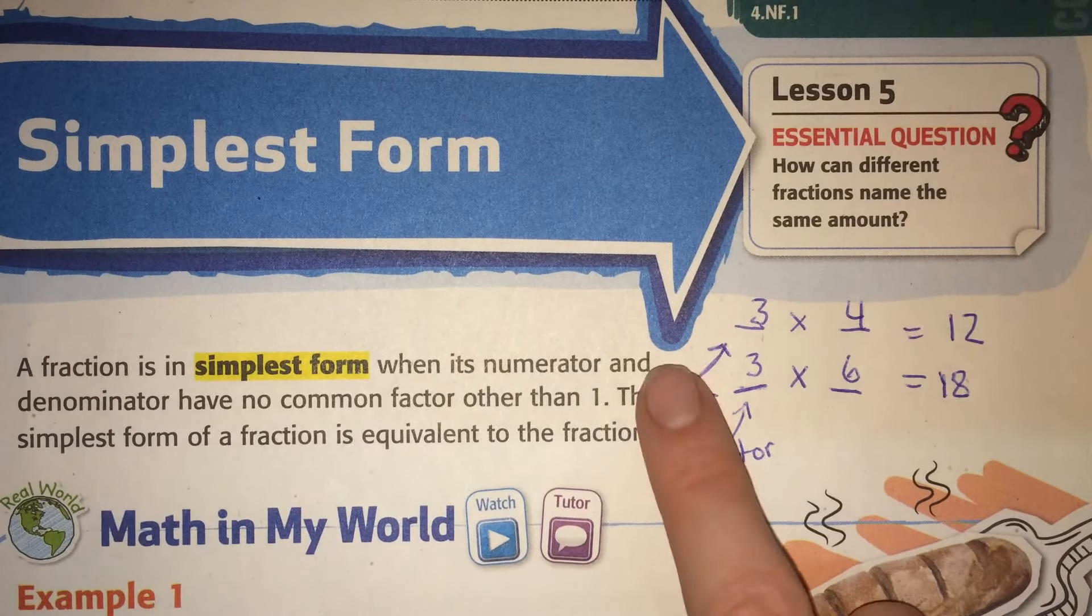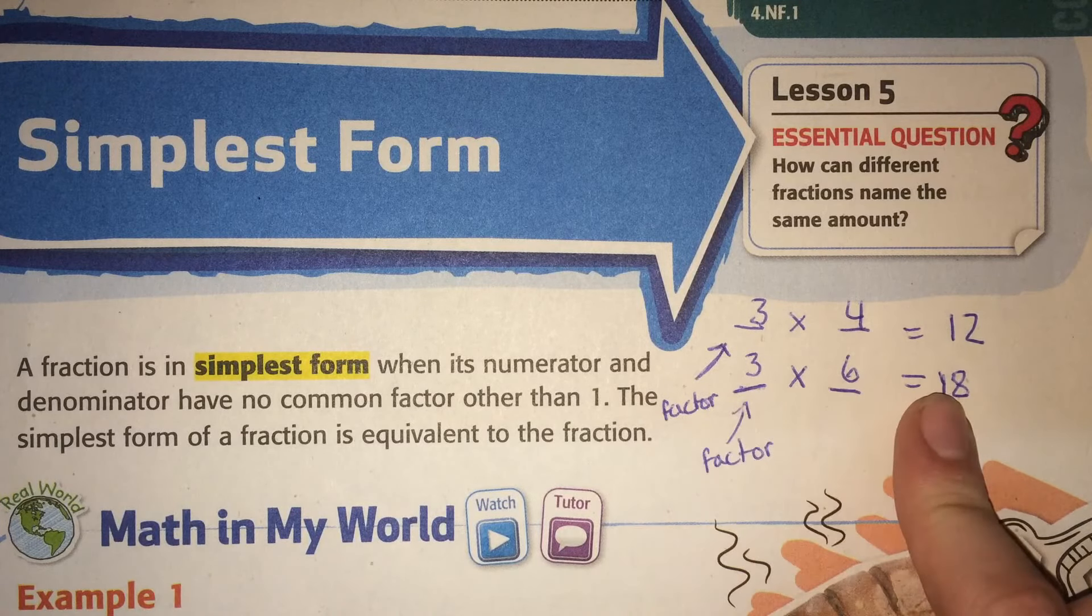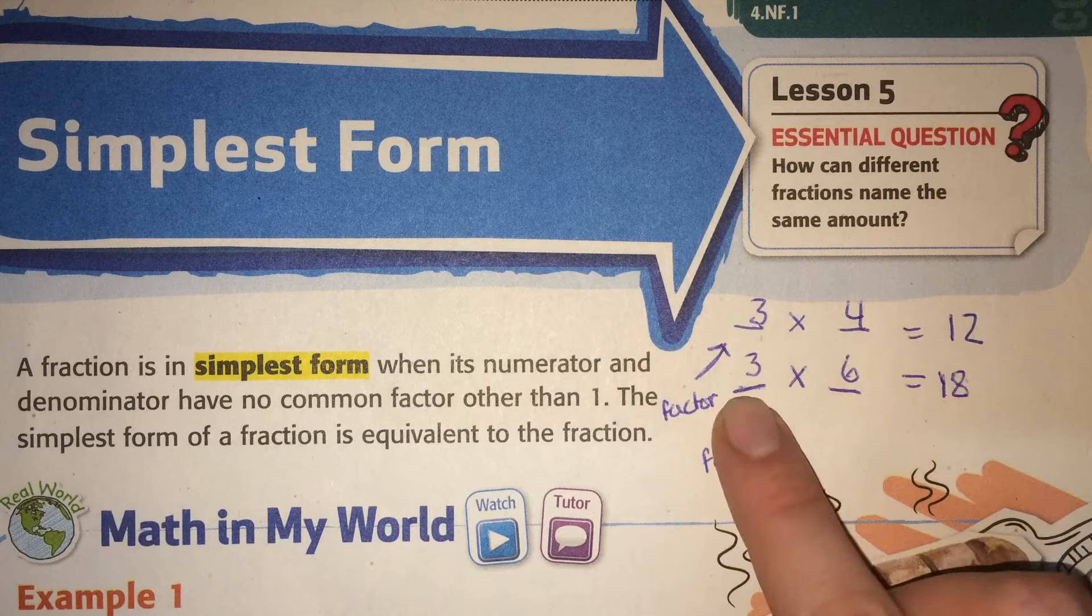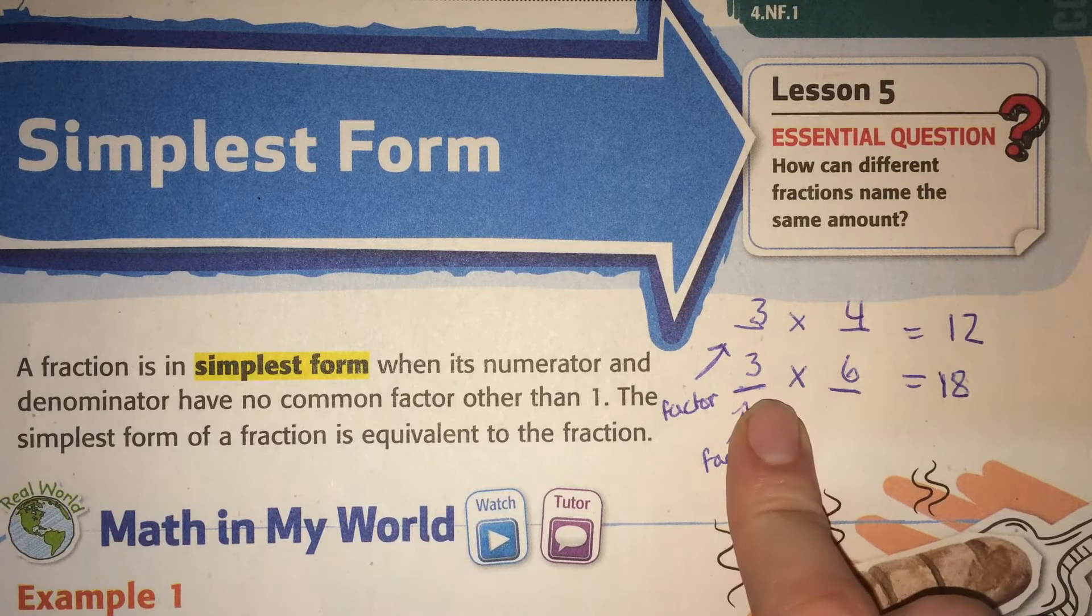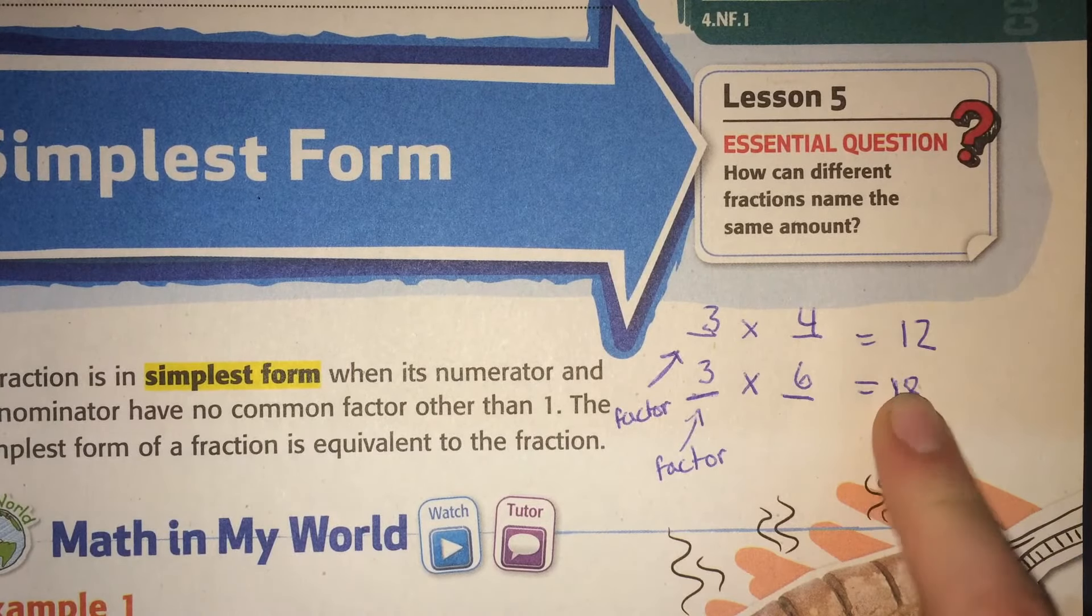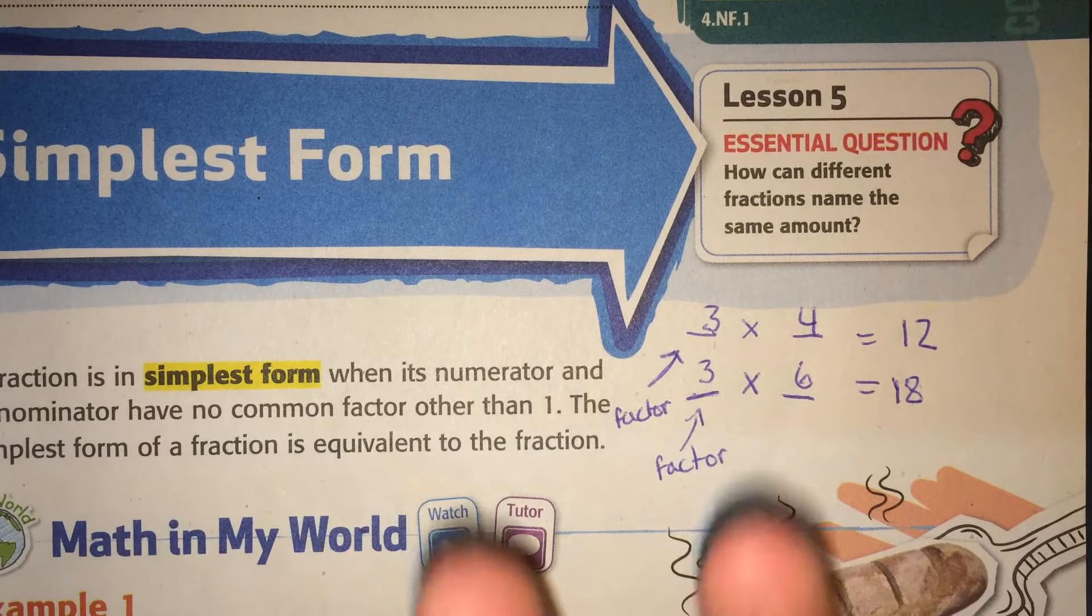Remember that a factor is one of the things in a multiplication problem. It's one of the numbers in the math fact. So these numbers, 12 and 18, have a common factor. They both have 3. Common means they both have it.